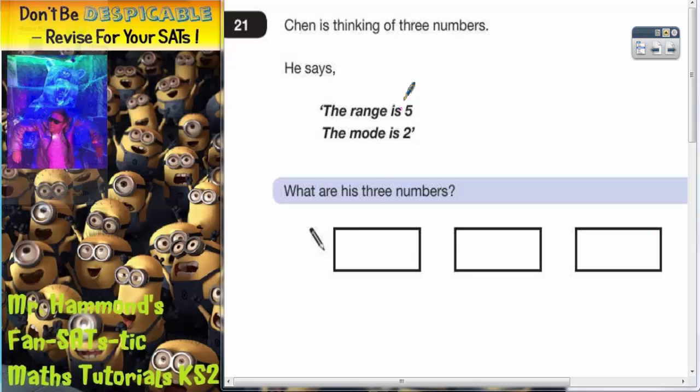So we've only got two clues to go on. The first clue, the range is five. Now the range, you've got to remember, is the difference or the gap between the smallest and biggest number.